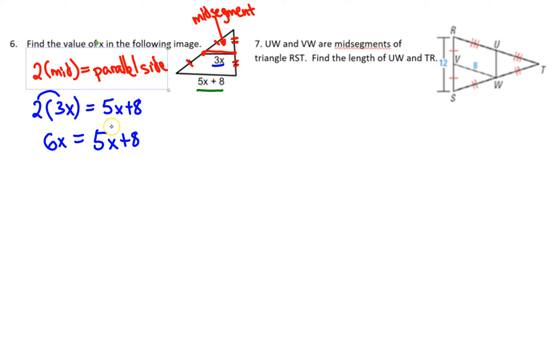Now we get the x's together. Subtract 5x from both sides: 6x minus 5x equals x, and we're left with x equals 8.